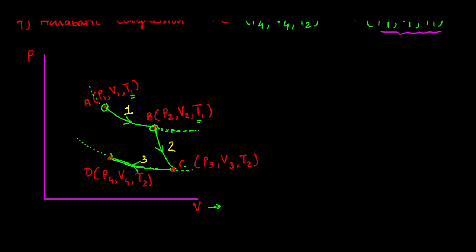The last step, number 4, is adiabatic compression — not a straight line but a curve. After step 4 we come back to point A, completing the cycle. This cycle is the Carnot cycle. You have to memorize these four steps.